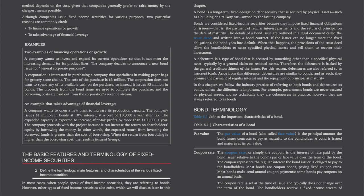The Basic Features and Terminology of Fixed Income Securities: In most cases, when people speak of fixed income securities, they are referring to bonds. A bond is a long-term fixed obligation debt security that is secured by physical assets, such as a building or a railway car, owned by the issuing company. Bonds are considered fixed income securities because they impose fixed financial obligations on issuers — that is, the payment of regular interest and the return of principal on the date of maturity.